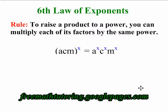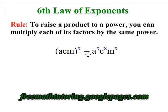The sixth law of exponents says to raise a product to a power, you can multiply each of its factors by the same power. This means when we have the product of a, c, and m all in a bracket being raised to the power of x, we can make that equal to a to the x, c to the x, m to the x.